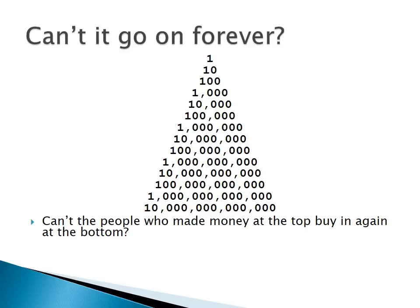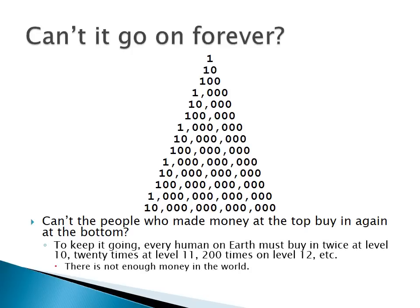Some students ask: can't the pyramid go on forever? At the level of 10 billion people, everybody on Earth has to buy in twice. At the 11th level — assuming a population of about 5 billion — everybody has to buy in 20 times. At level 12, it's 200 times. There's not enough money in the world to keep this going. Furthermore, all these people are doing is moving money around. Nobody is farming, growing food, building houses or cars — nothing that makes lives better. They generate no wealth, which is why these things are ultimately a waste of time.